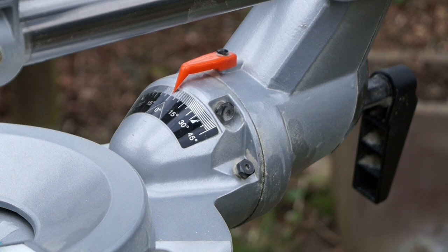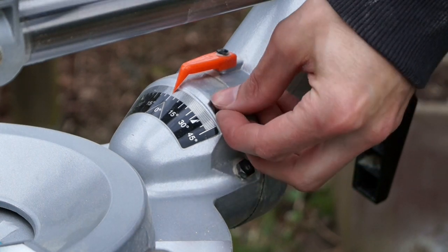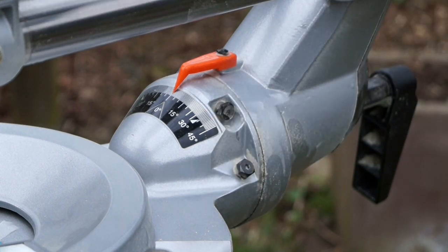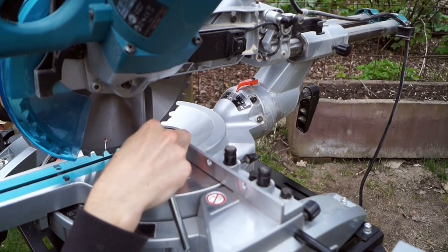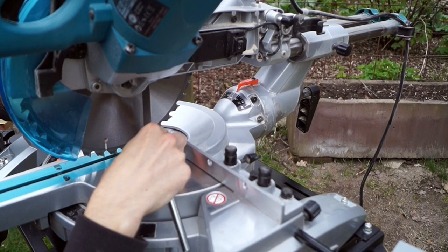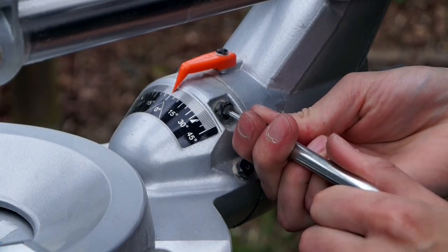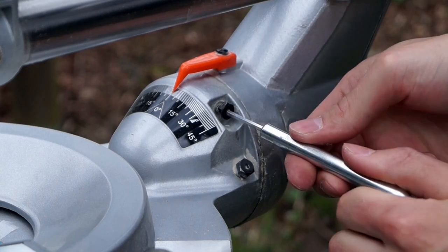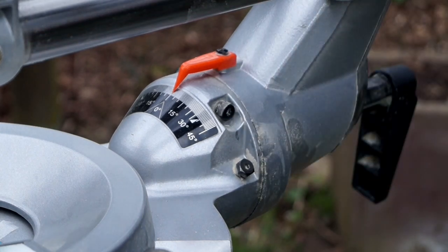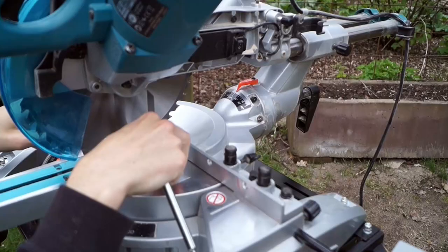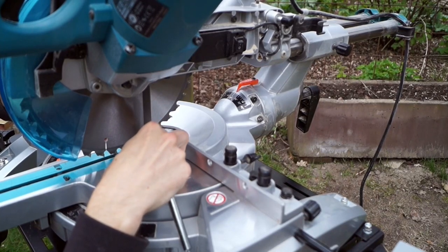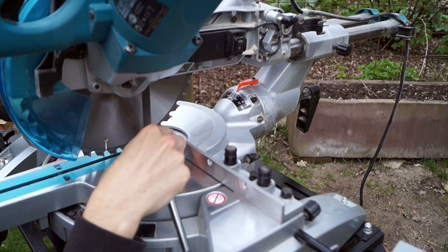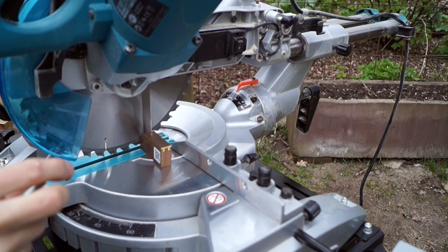On the right hand side you find two of these adjusting bolts. The top one is the right one. Use your square while adjusting the screw. Loosening the screw makes the top of the blade tilt to the right. Tightening the screw tilts the top to the left. Check after every turn on both sides of the saw blade if it's square to the saw base.